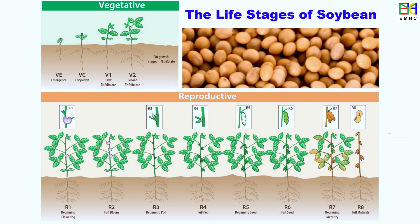The life of soybean can be divided into two categories: vegetative growth, or V stages, from VC and V1 to VN, and reproductive growth, or R stages, from R1 to R8.